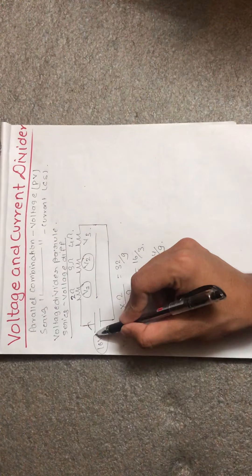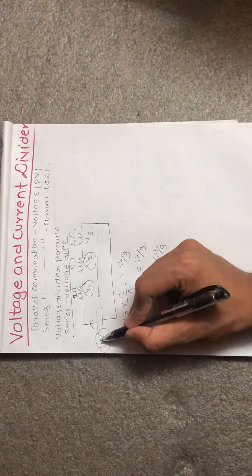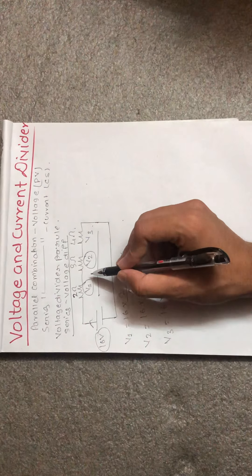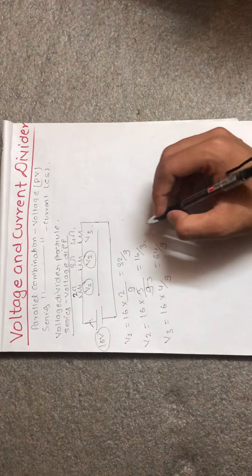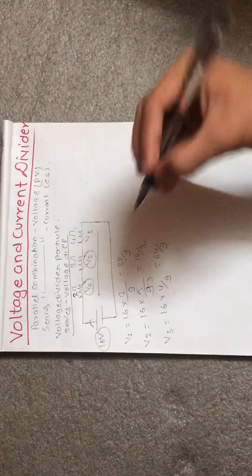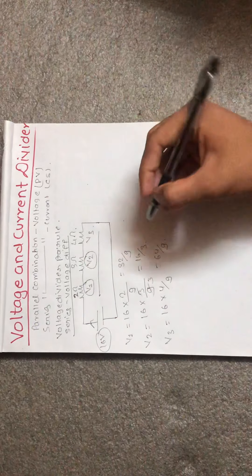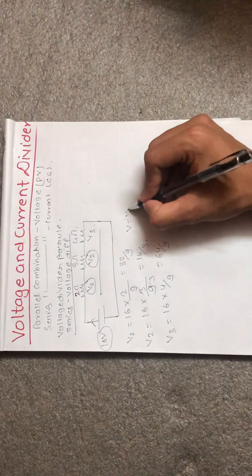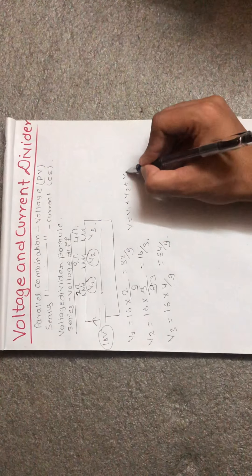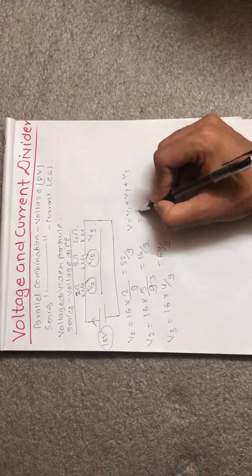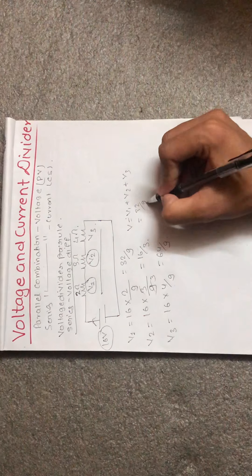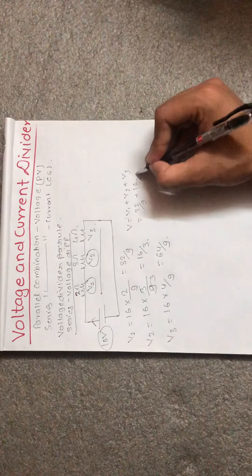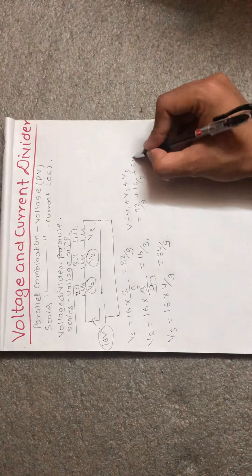V3 equals total voltage multiplied by R3 over total resistance = 64/9. We can verify this quickly: V1 + V2 + V3 = 32/9 + 16×3/9 + 64/9, checking that the sum equals the total supply voltage.